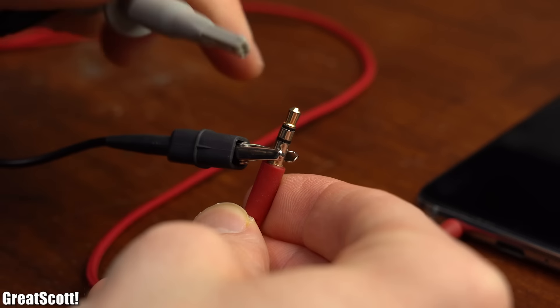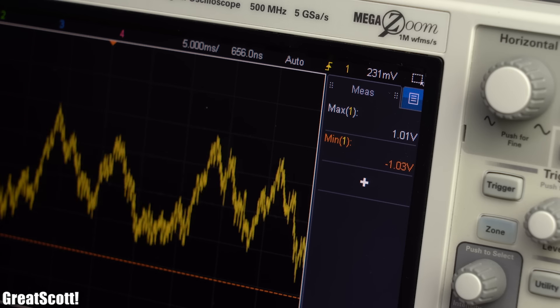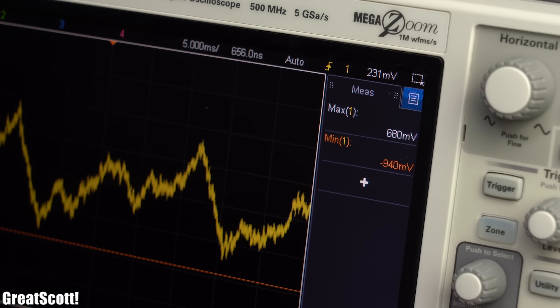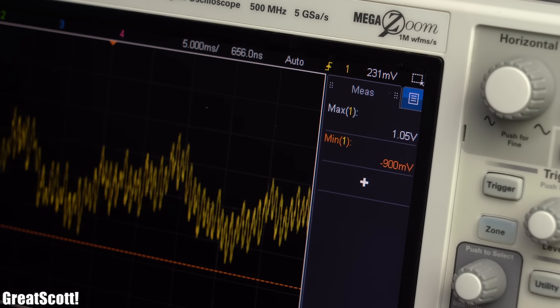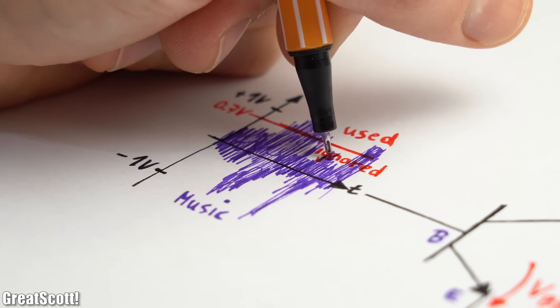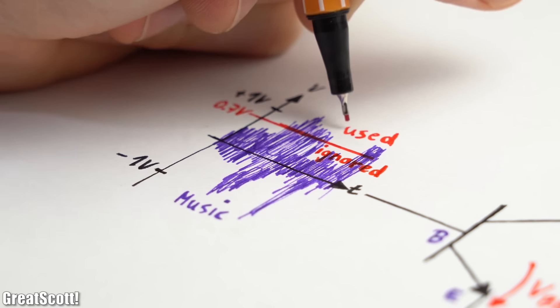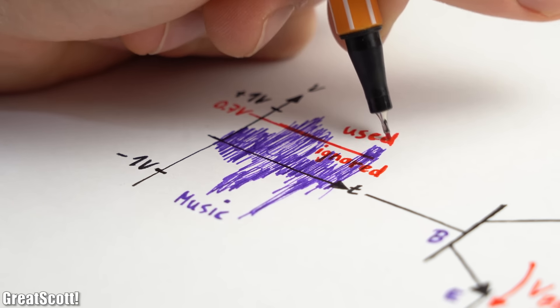But if we have a look at a common audio signal of a phone, we can see that it comes with maximum and minimum voltage values of around ±1V. That means that pretty much all of the input audio signal would get ignored by the BJT, which is definitely not what we want.